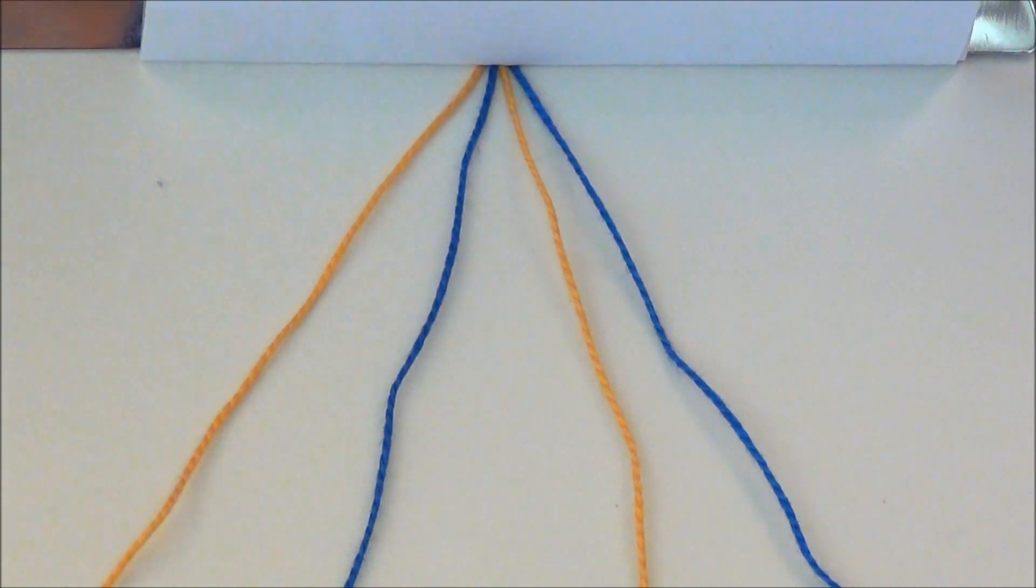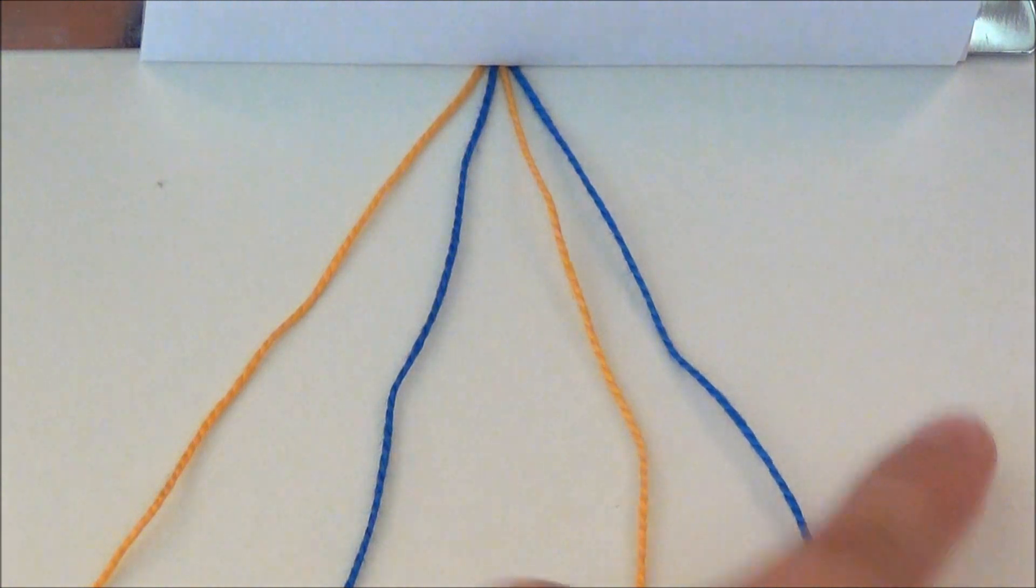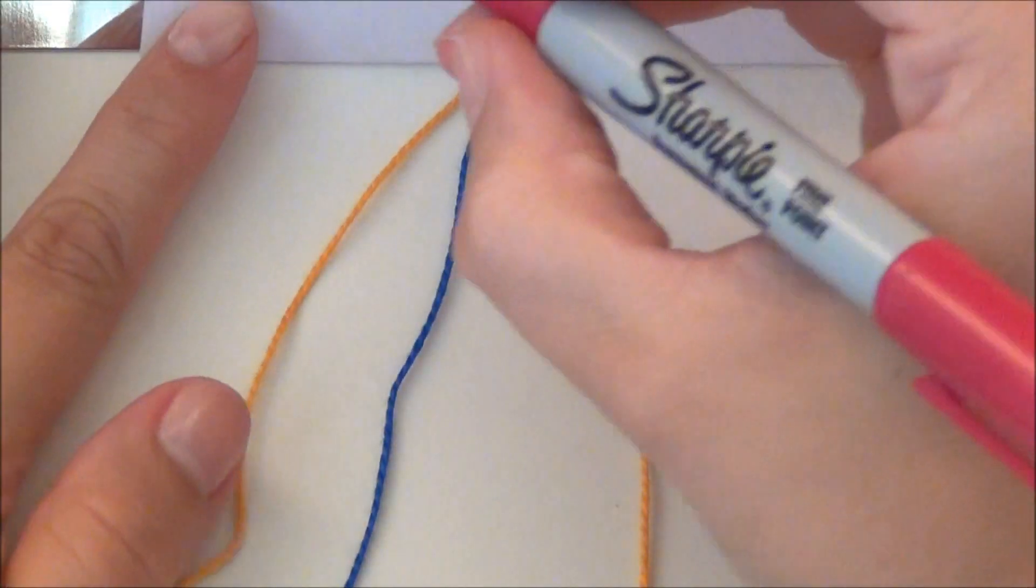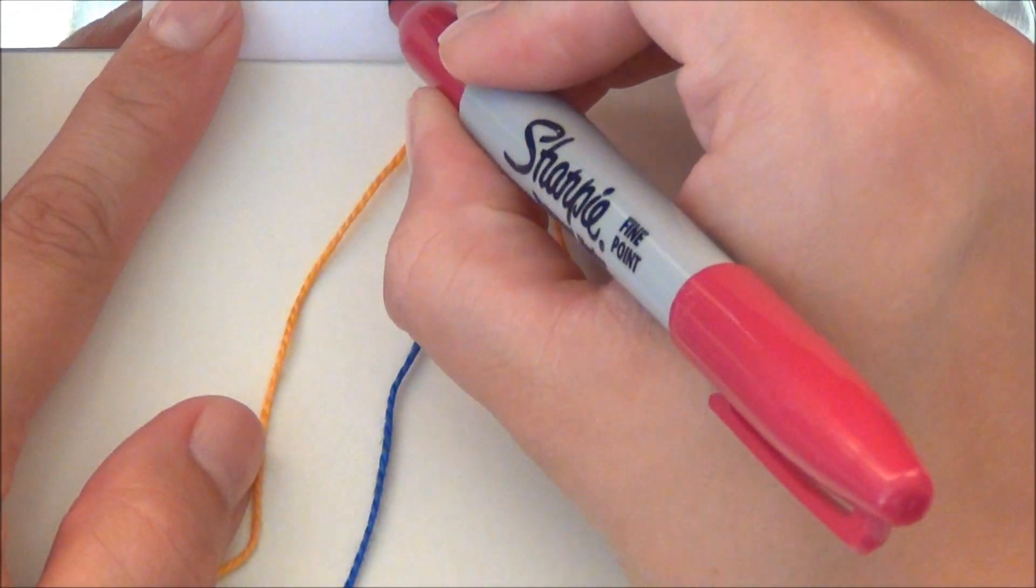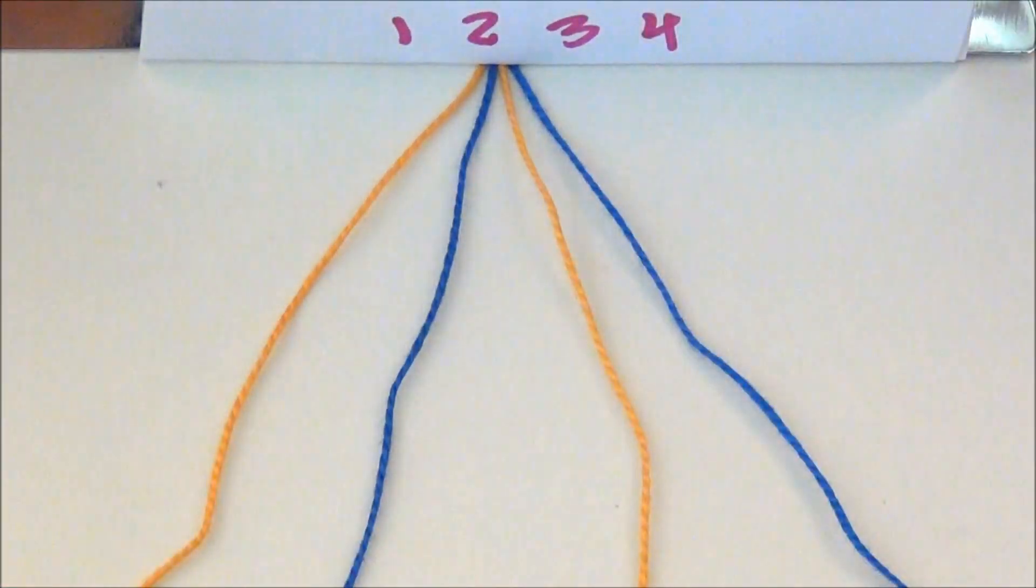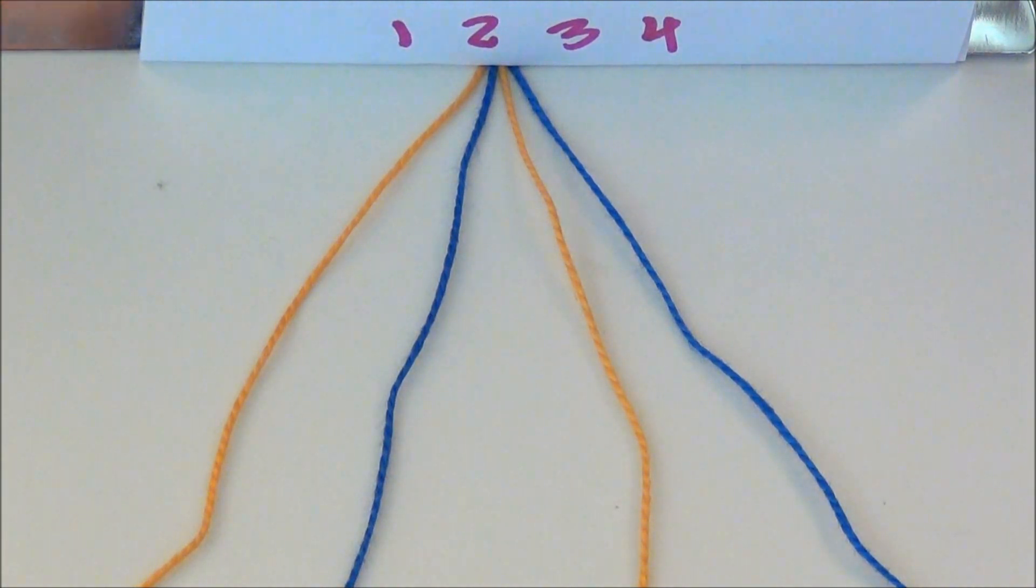To do a candy stripe, you're going to work left to right. Just to clarify a little bit on this, I'm going to number the strings one, two, three, four.